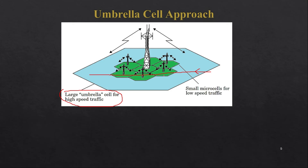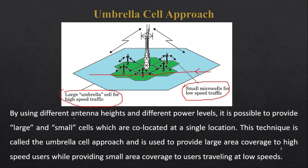If a pedestrian user is moving within this area, a sophisticated algorithm allocates the user a signal from the small microcell for low-speed traffic. By using different antenna heights and different power levels it is possible to provide large and small cells that are co-located in a single area. This technique is called the umbrella cell approach, and it is used to provide large area coverage to high-speed users while providing small area coverage to users traveling at low speed.